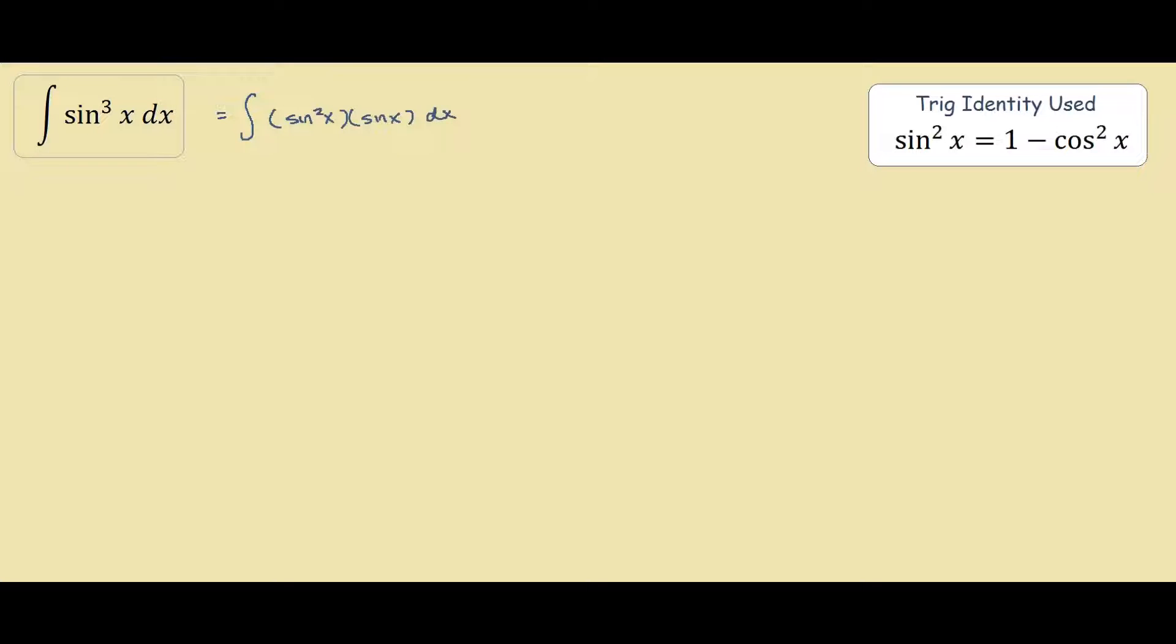The reason for doing this is because most of our trig identities are to the power of 2 or 1. So as you can see, we found an identity straight away, sin squared x equals 1 minus cos squared x.